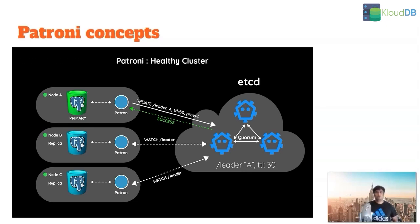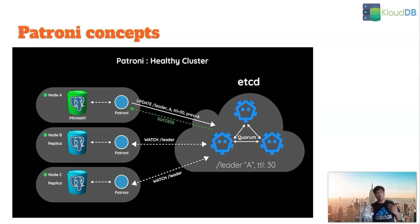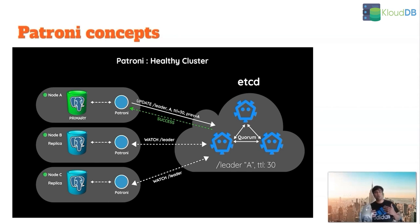In this video we're going to take a look at Patroni. So how does Patroni work? Patroni is a bot that is written in Python. It runs on every Postgres node. In this case we have three nodes: node A, node B, node C.